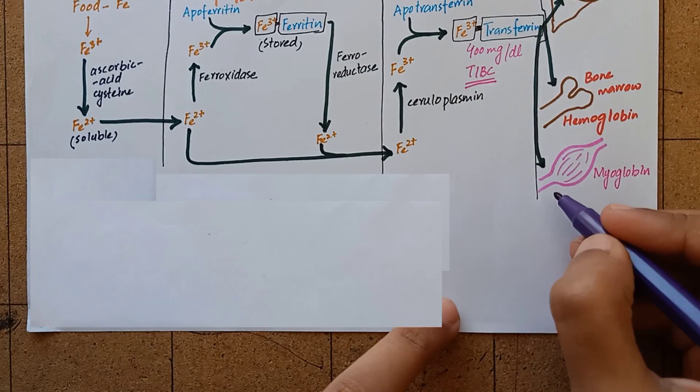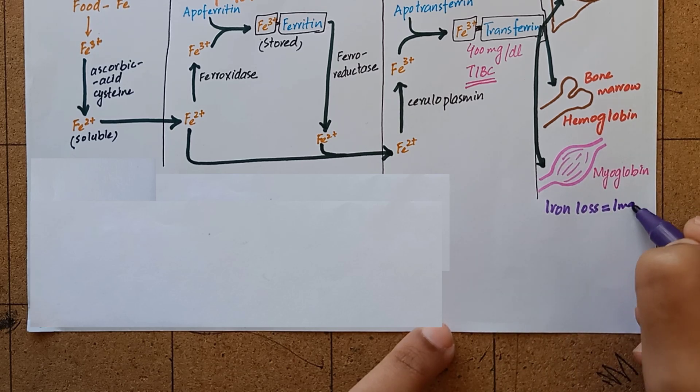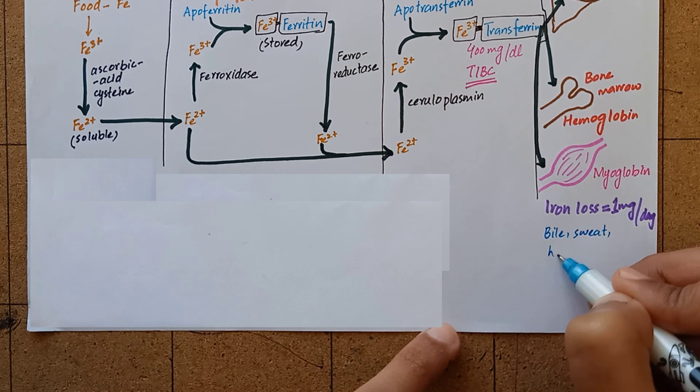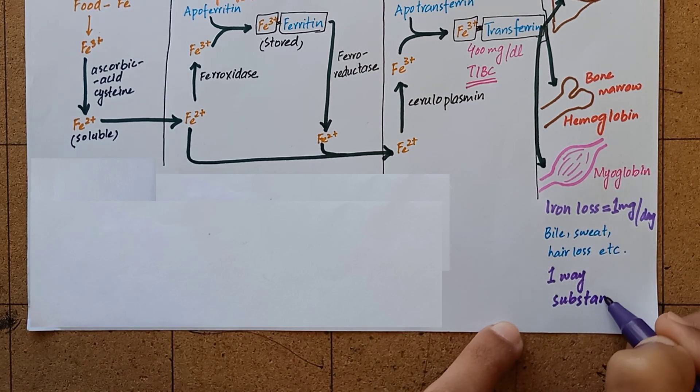Iron is not excreted in urine. Its loss from the body is less than 1 mg per day which may occur through bile, sweat, hair loss, etc. Hence, iron is regarded as a one-way substance.